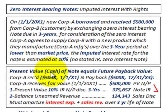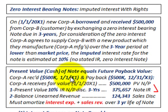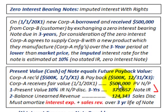When we're dealing with these notes and we have to record them on our balance sheet, we have to determine what the present value is. The present value of cash on the note equals the future value or the payback value. Corporation A is receiving $500,000 on 1-1-20X1 and they're going to pay back $500,000 three years later on 12-31-20X3. So Corporation A is going to receive their fair value on 1-1-20X1 of $500,000.